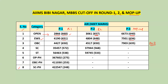If you observe Phase 2, you will have a chance in the Mop-up round. For OBC candidates, here the marks are 650 and 650. The students have the same marks, but the rank is different.